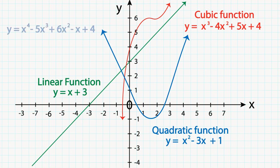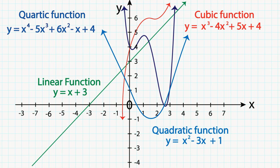y equals x to the power of 4 minus 5x cubed plus 6x squared minus x plus 4 is fourth degree and we call it a quartic function. And there are more.